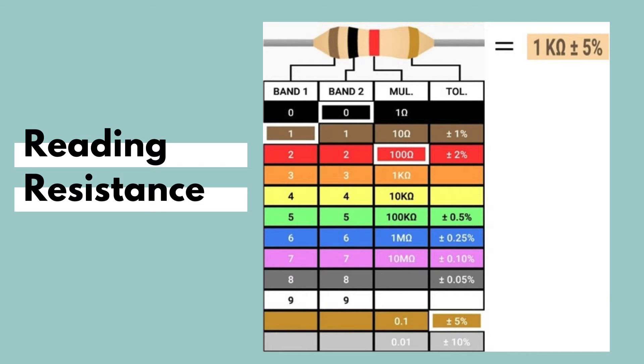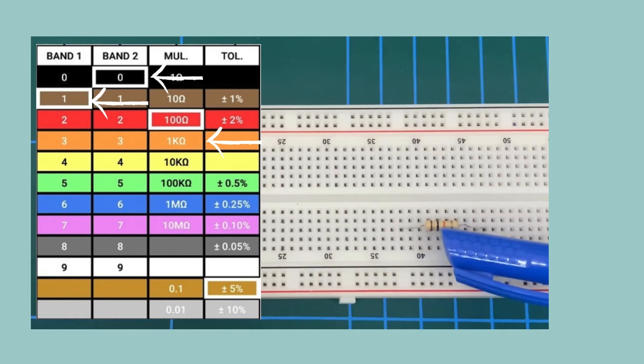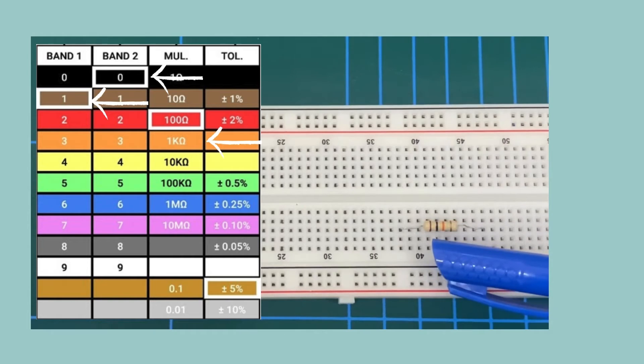So let's jump over to the workbench and look at how we can measure resistance with the help of a multimeter. First things first, we have a breadboard, and in that breadboard we have a resistor that's connected between two nodes. So when we zoom in into the resistor, we can see that the resistor has three colored bands as well as a tolerance band.